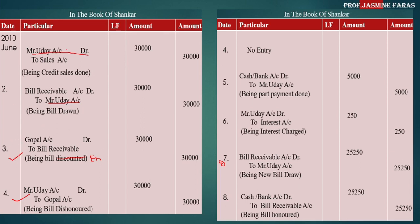So checking the pattern: first entry — debit, credit; second — debit, credit; third — debit, credit (no drawee name); fourth — debit, credit; fifth — debit, credit; sixth — debit, credit. The last entry is the honored bill, where cash comes in and bill receivable goes out. When the bill is honored, there is no drawee name. When we endorse, discount, or send for collection, there is also no drawee name in that third entry.